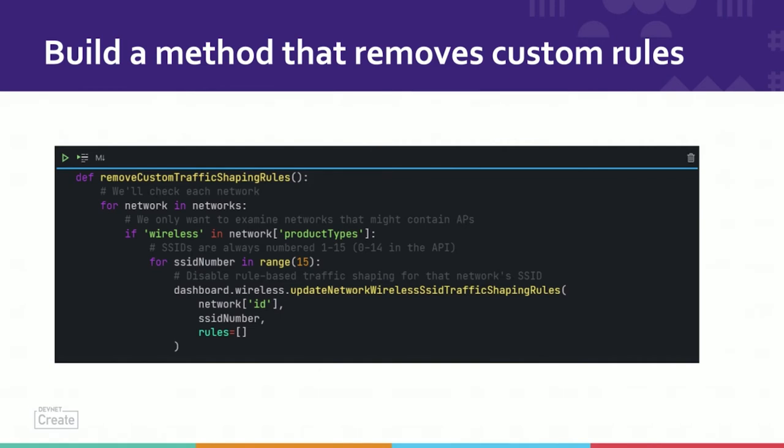This method is going to remove custom rules from anywhere where the SSID is found. Like before, we're defining the method and then giving the user the option to run it later. This applies to all the SSIDs so that we don't have to query current state — if we just want to remove all of them, we don't need an additional query to check that they exist. We can update all of those SSIDs pretty quickly using this function.